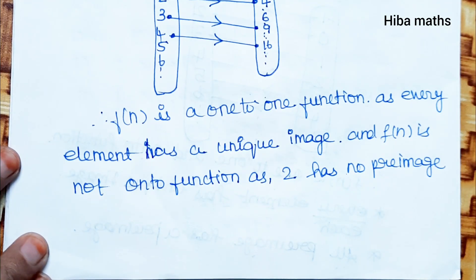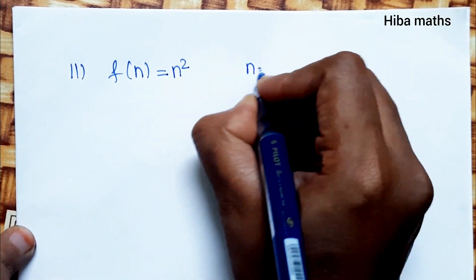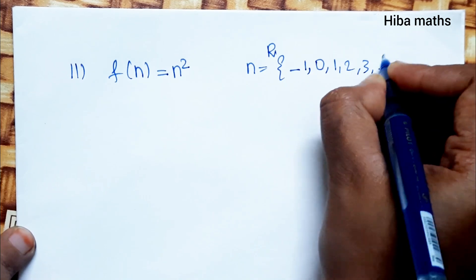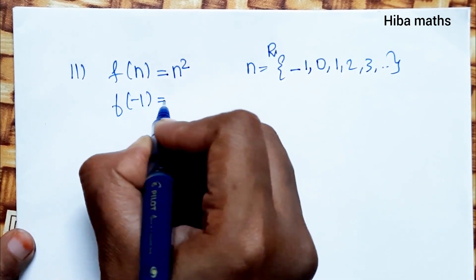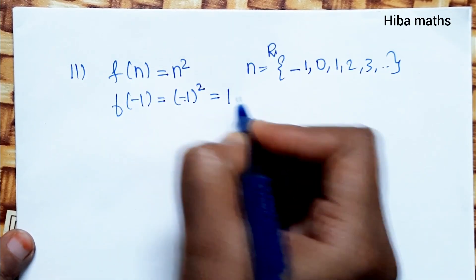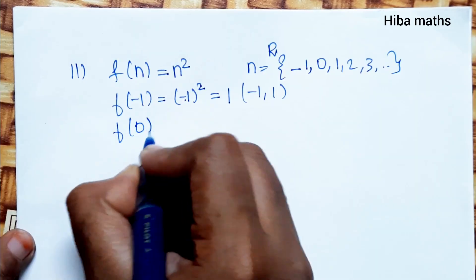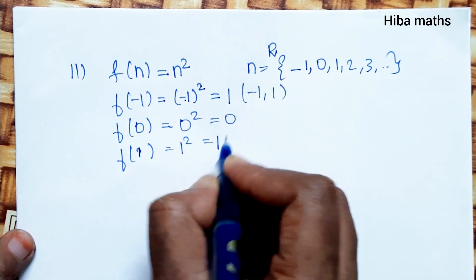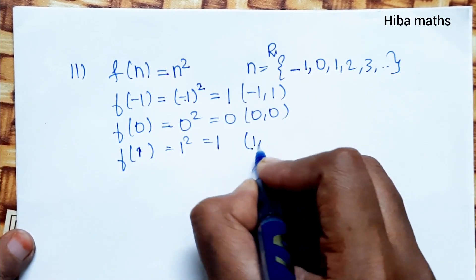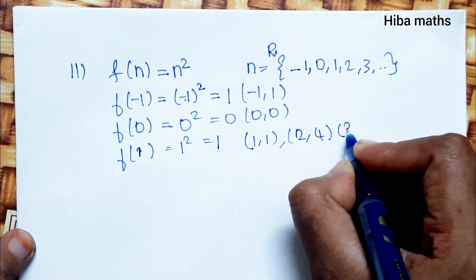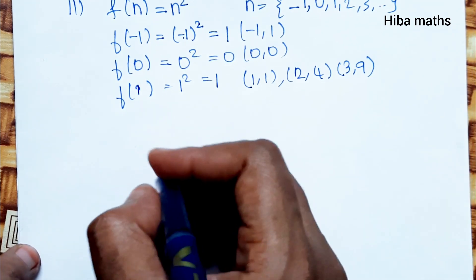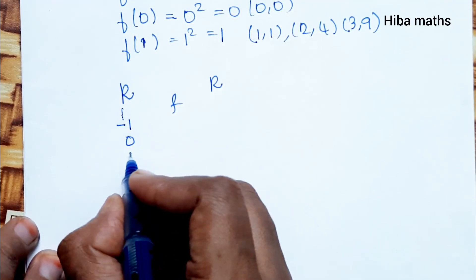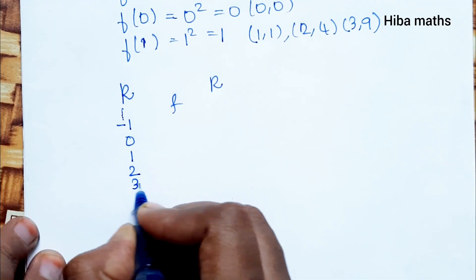Now the second subdivision: f(n) = n² where n belongs to R (real numbers), so values include −1, 0, 1, 2, 3 and so on. f(−1) = (−1)² = (−1)(−1) = 1. f(0) = 0² = 0. f(1) = 1² = 1. So both −1 and 1 give the same image 1. Continuing: f(2) = 4, f(3) = 9, and it goes on.